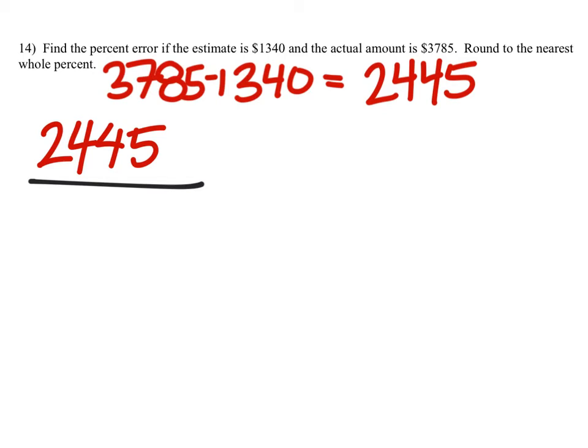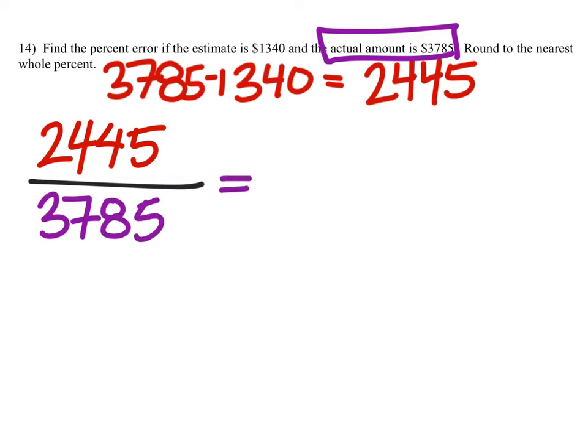And I will divide this by the actual amount, which it tells us right here. The actual amount is the $3,785. And when I put this into the calculator, I get 0.64597.